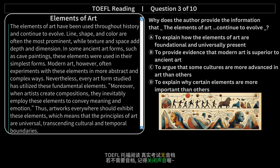The elements of art have been used throughout history and continue to evolve. Line, shape, and color are often the most prominent, while texture and space add depth and dimension. In some ancient art forms, such as cave paintings, these elements were used in their simplest forms. Modern art, however, often experiments with these elements in more abstract and complex ways. Nevertheless, every art form studied has utilized these fundamental elements. Moreover, when artists create compositions, they inevitably employ these elements to convey meaning and emotion. Thus, artworks everywhere should exhibit these elements, which means that the principles of art are universal, transcending cultural and temporal boundaries.